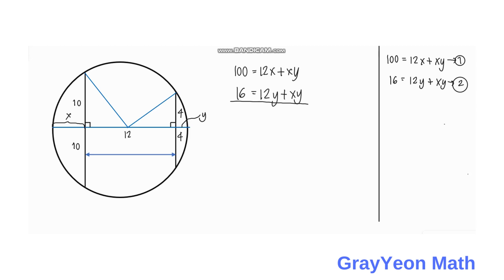Next step that we have to do is we need to subtract equation 2 from equation 1. 100 minus 16 is equal to 84, and 12X minus 12Y, and XY minus XY cancels out. We have 84 is equal to 12X minus 12Y, but we can factor out 12 and leave X minus Y in the parenthesis. We can divide this by 12 both sides. So we have 7 is equal to X minus Y.